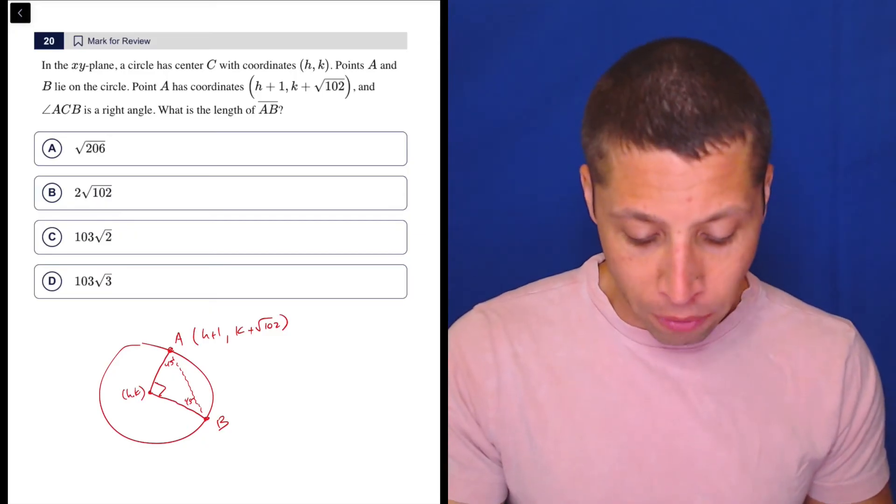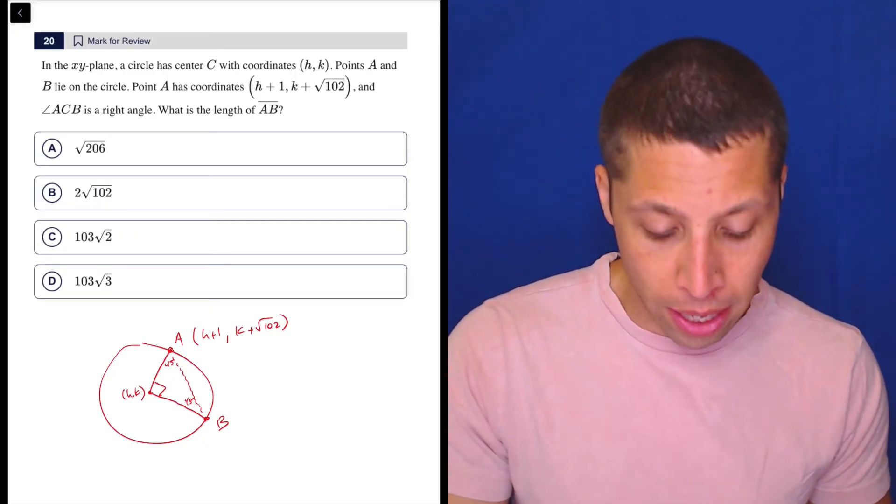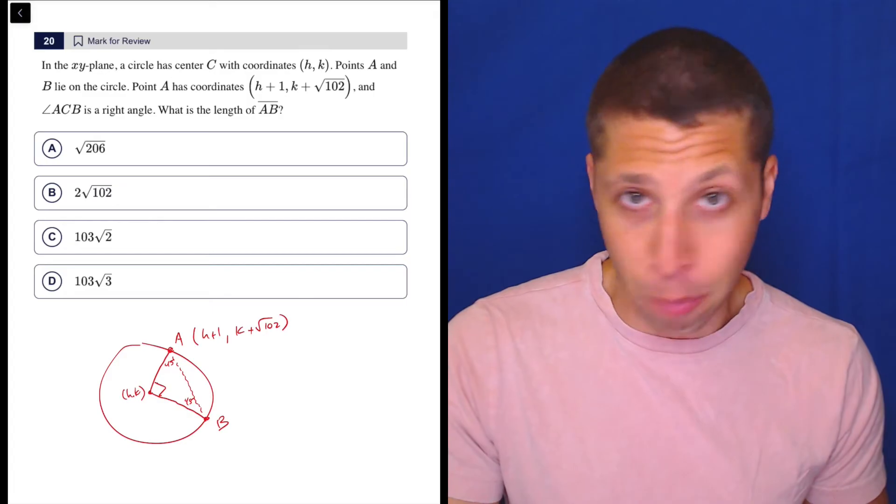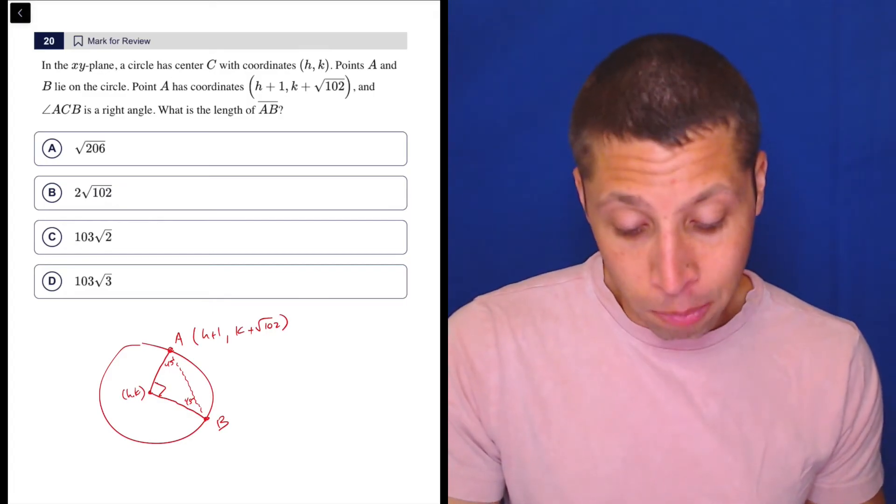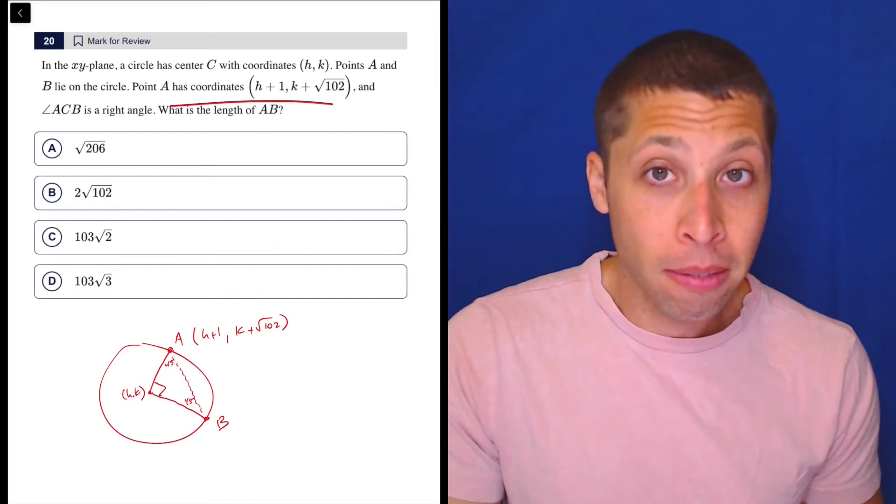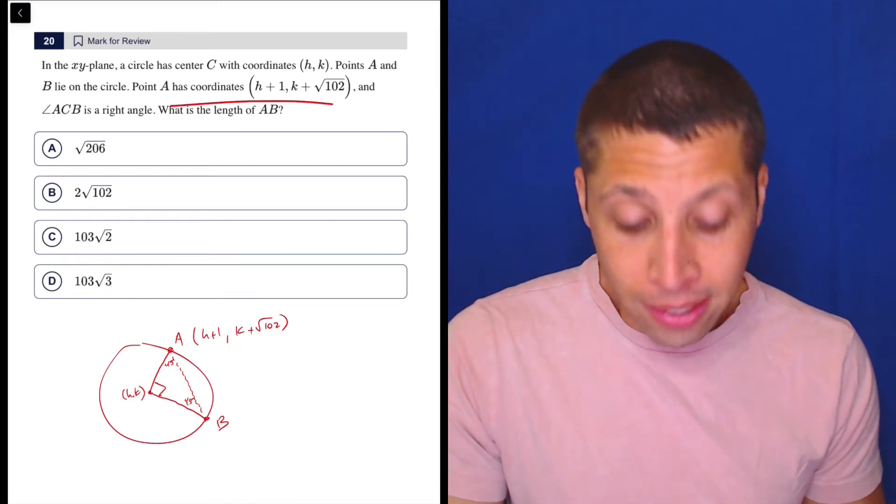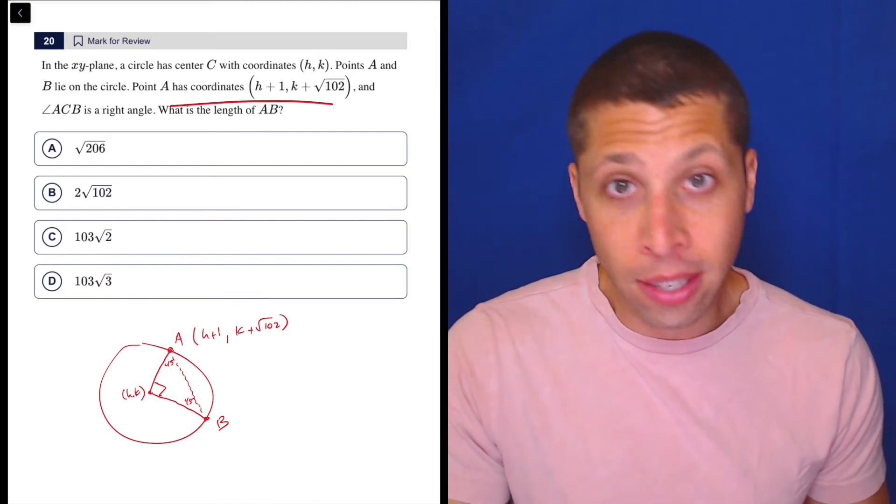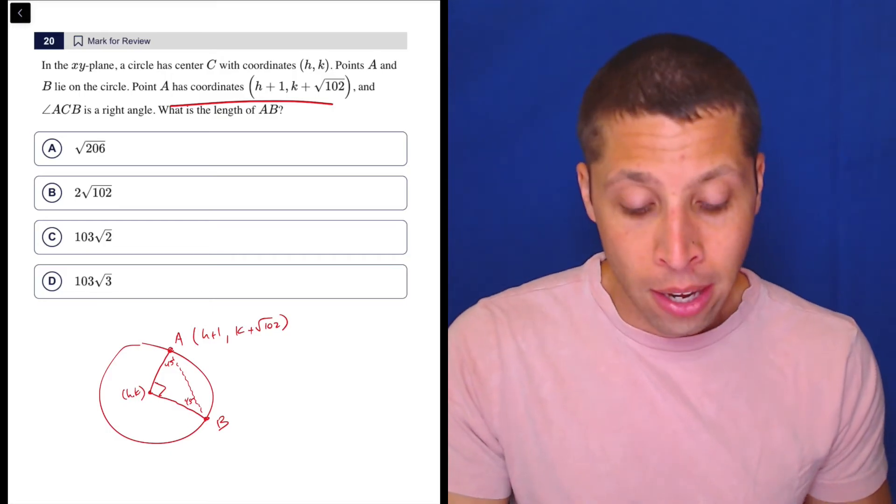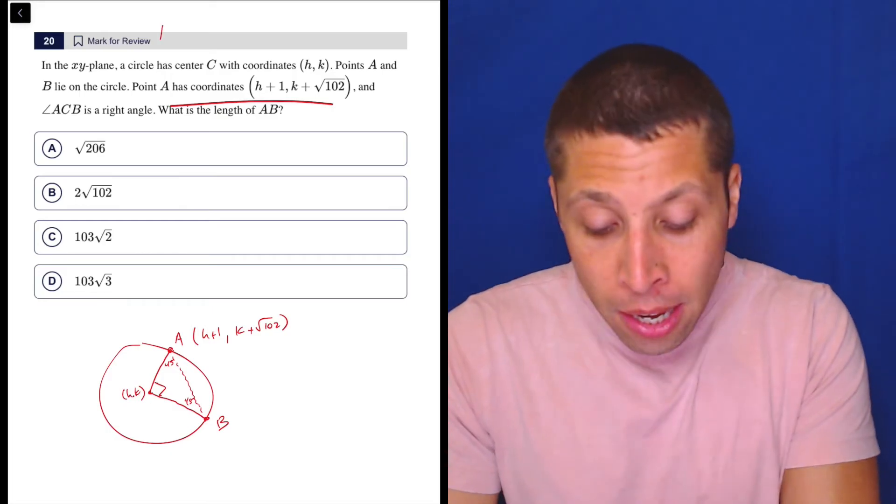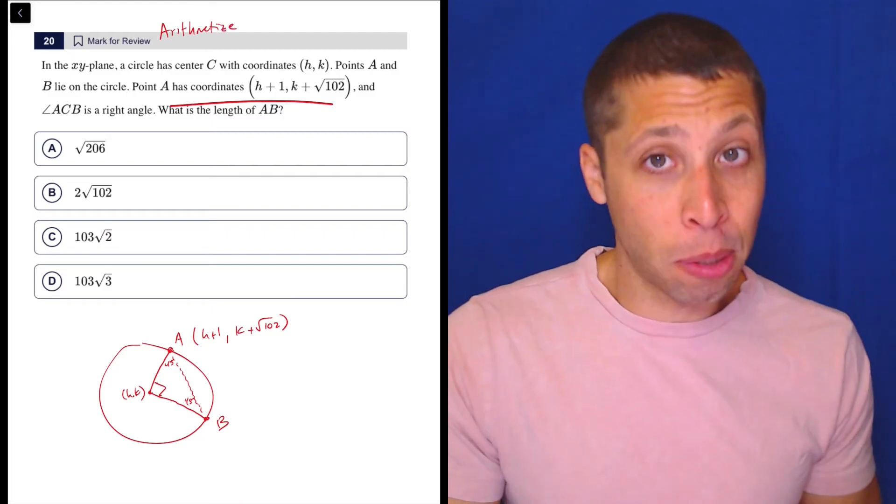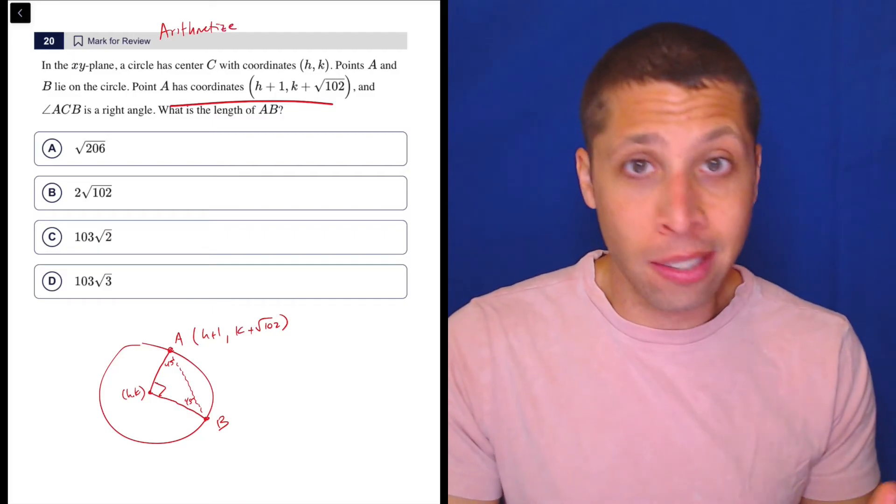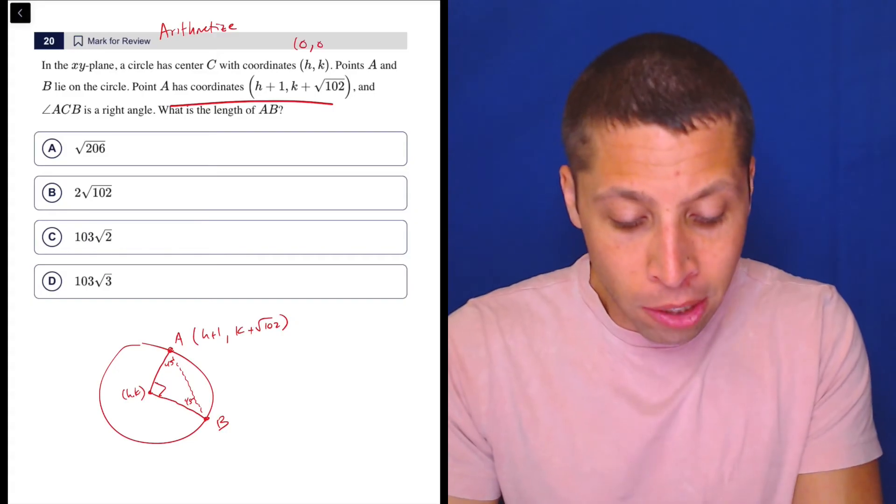So here, though, it might be difficult. We have no dimensions of any kind for this thing, and we have this really weird set of points. Here's what I would do. At this point, I'd be like, well, this point A is a mess. But it doesn't say what the value of H is. It doesn't say what the value of K is. So maybe they don't matter. Maybe I can arithmetize. Maybe I can just make up some numbers. And what would be the easiest center for this circle? How about 0, 0?